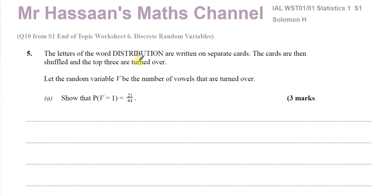This question is about the letters of the word 'distribution', which are written on separate cards. The cards are then shuffled and the top 3 are turned over. So basically you're picking at random — you don't know what they are, they've been shuffled around. When you take a card and turn it over, you place it down without putting it back in the pack. So this is sampling without replacement.